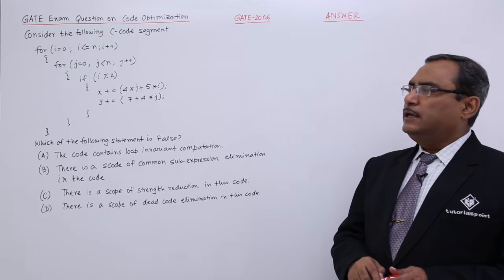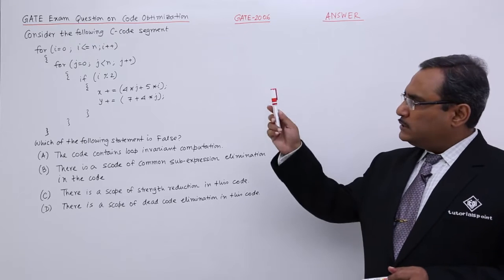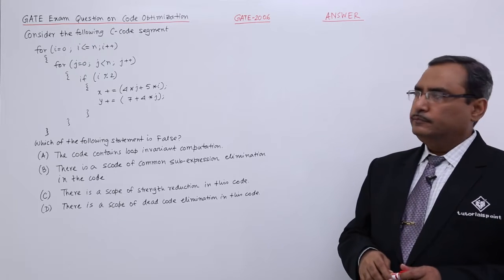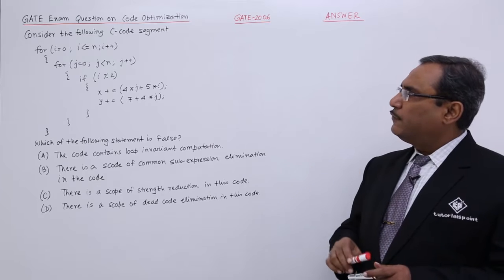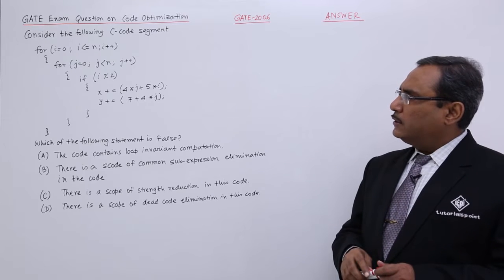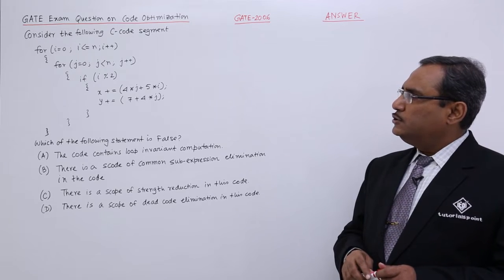Consider the following C programming code. One C programming code has been given. Consider the following C code segment and the code is here like this: for i is equal to 0, i less than n, i plus plus.